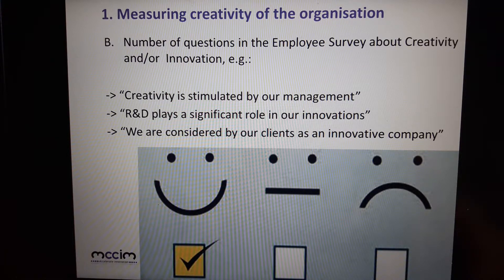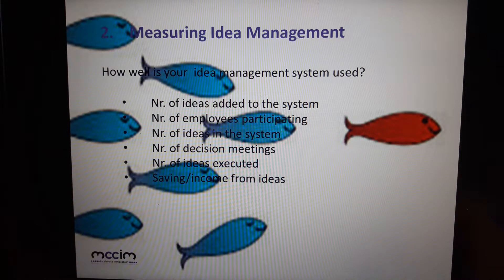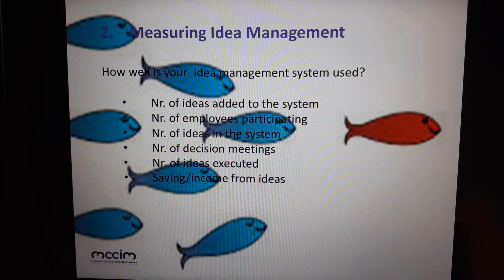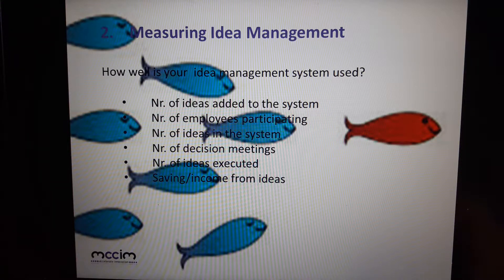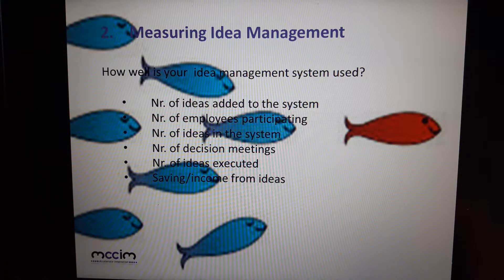Moving to measuring idea management: idea management is essentially a database. The first question is whether there is a database capturing ideas that linger around in the company. If so, how many ideas are in the system? How many employees are participating? How often does the management team hold a decision meeting about them? How many of those ideas discussed in meetings are actually executed? And finally, you can measure the savings or extra income generated from those ideas. All of this makes creativity measurable — and if you can measure it, you can manage it.